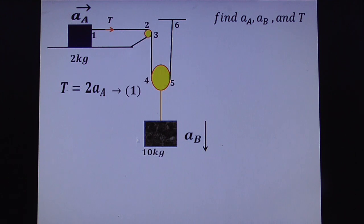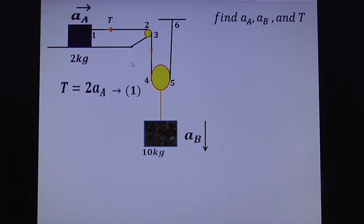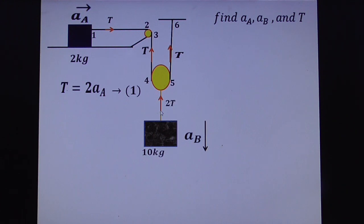Now for the second mass, observe how many forces are acting on it. Look at the string contact points with the pulley — there are six contact points: 1, 2, 3, 4, 5, and 6. Points 2, 3, and 6 are fixed, so acceleration is zero there. For the movable pulley, the string pulls with tension T on each side, giving a total upward force of 2T on the 10 kg mass.